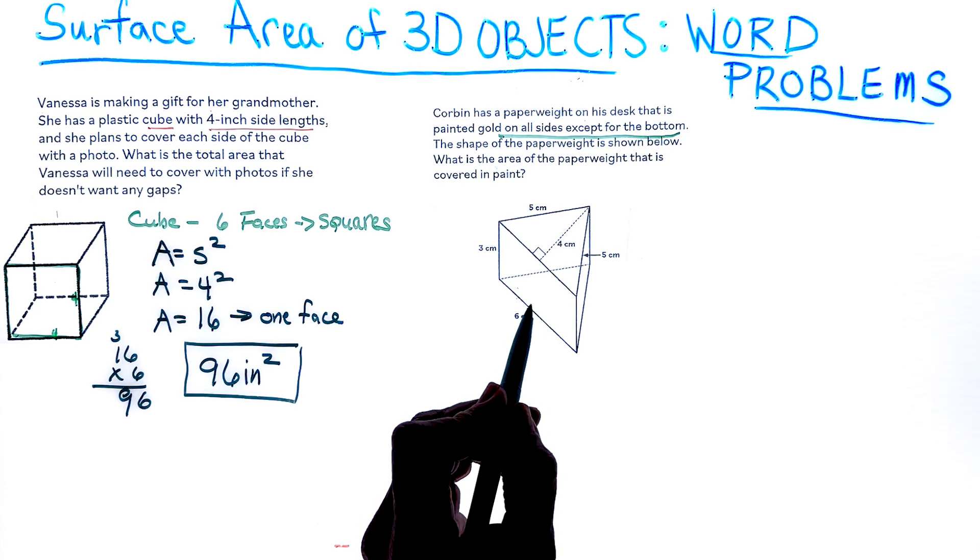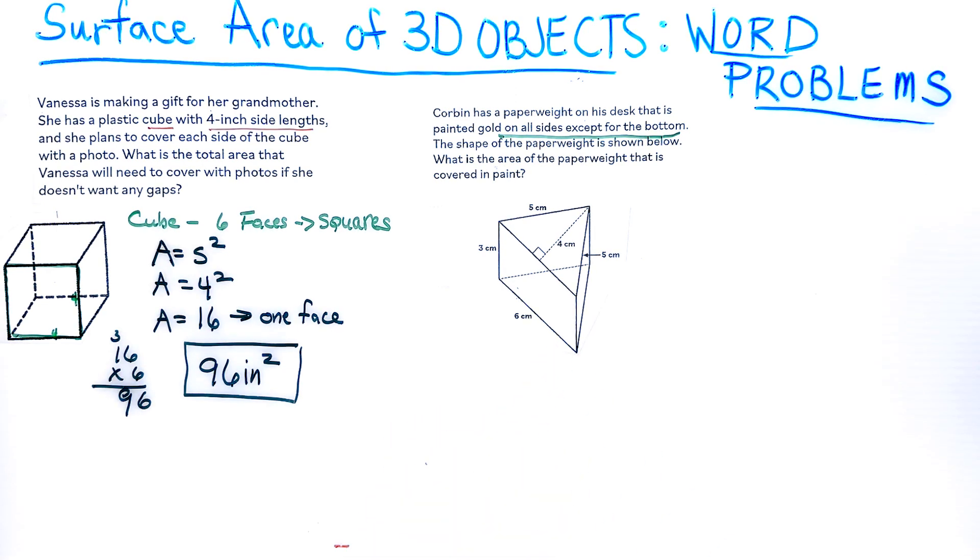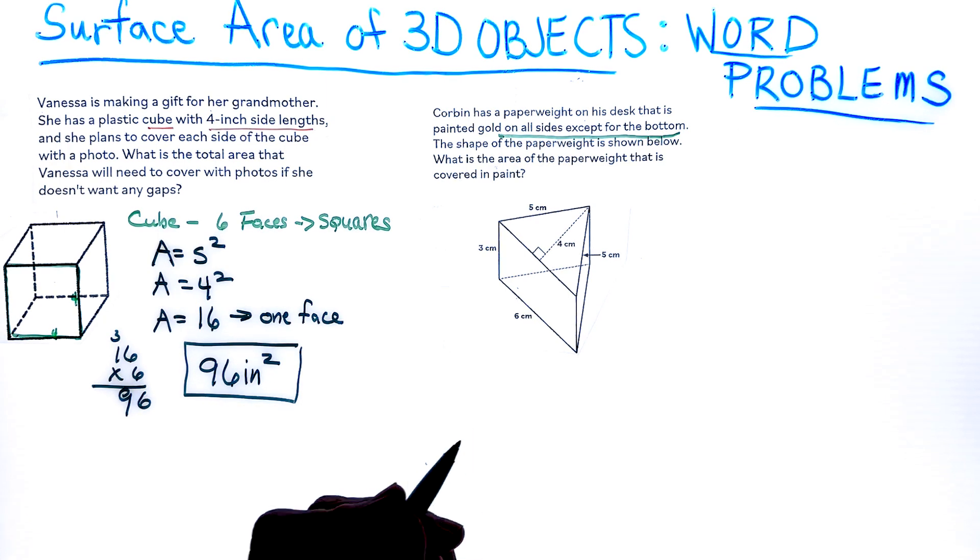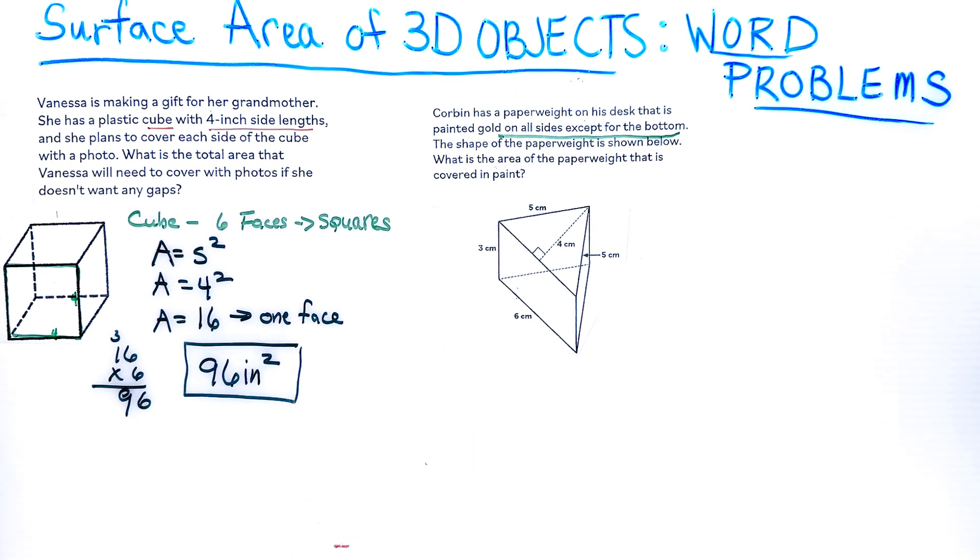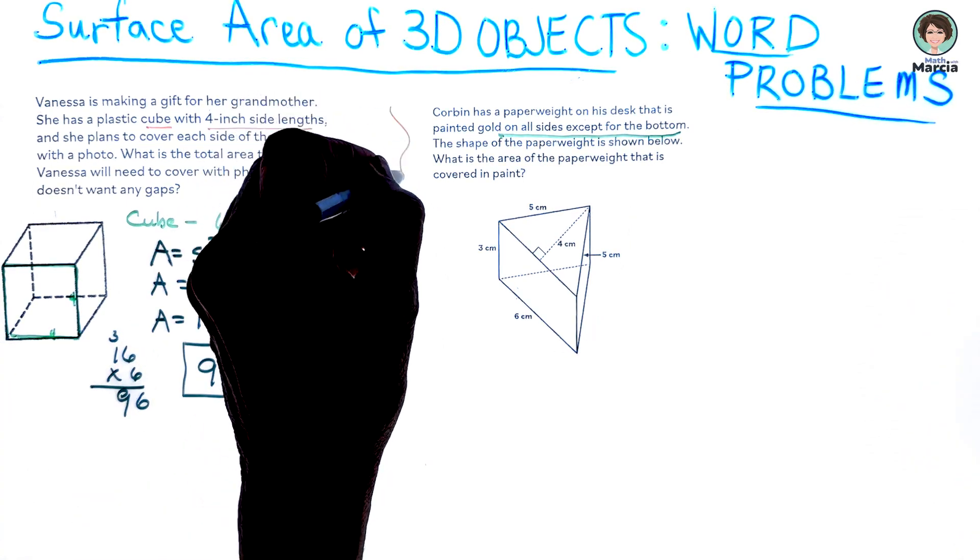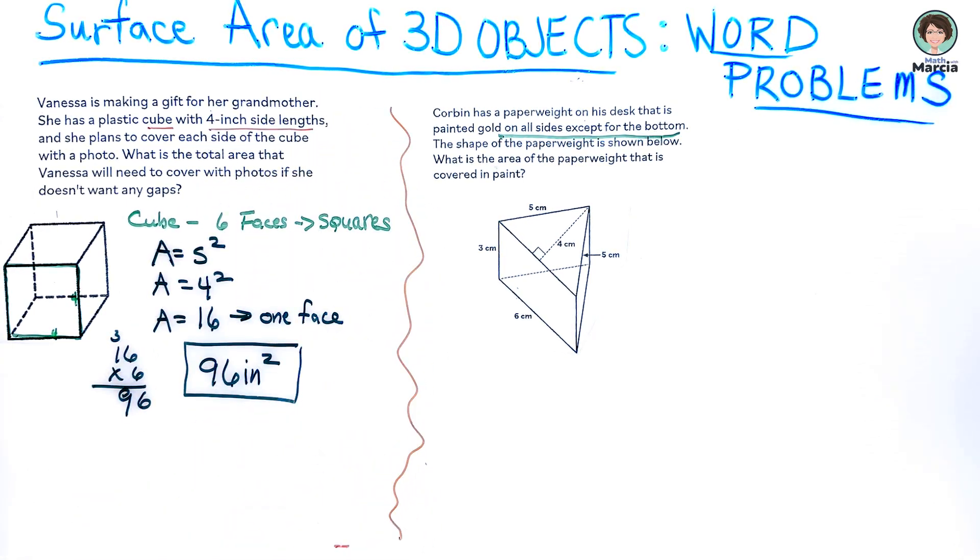He has a paperweight and it's painted on all sides except the bottom. That means we are not going to count the triangle base on the bottom. When we use the formula for a triangle we only need one of them. Let's start off with that. I'm going to separate my work here with brain waves. We're done with the first problem and headed to the second problem.